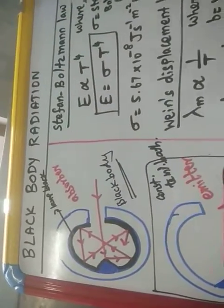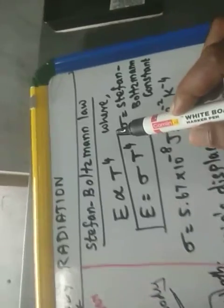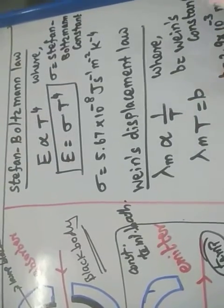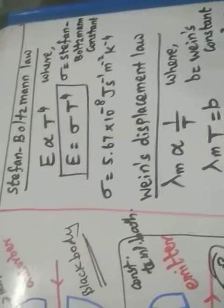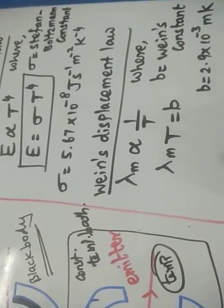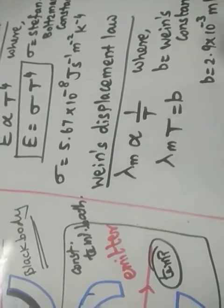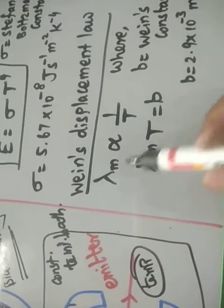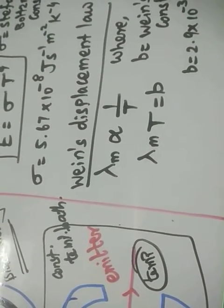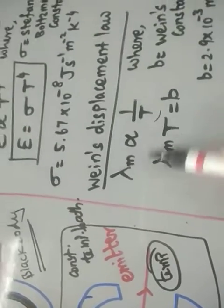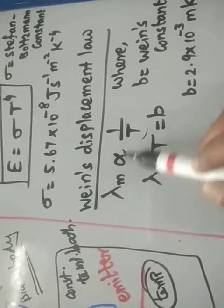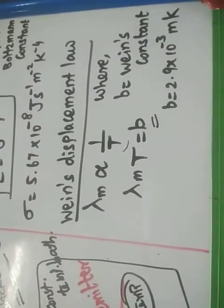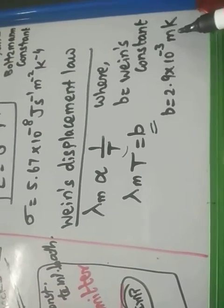In black body radiation, we also study Wien's displacement law. Wien's displacement law states that the wavelength corresponding to the maximum energy emitted by a black body is inversely proportional to the absolute temperature. This constant b is called Wien's constant, and its value is 2.9 × 10⁻³ m·K.